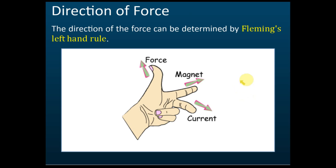The direction of the force can be determined by Fleming's Left-Hand Rule. There are two factors that affect the direction of the force: one is the current, and the other is the direction of the magnetic field. The magnetic field always moves from north to south, and the current is always from positive to negative.